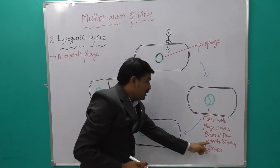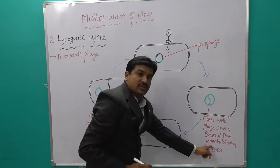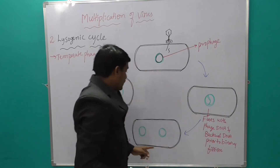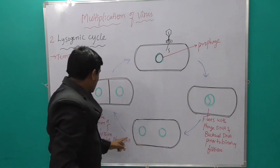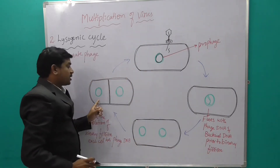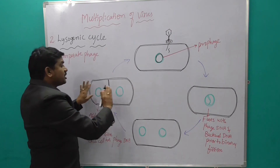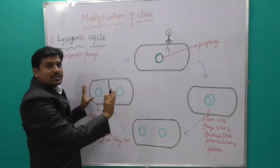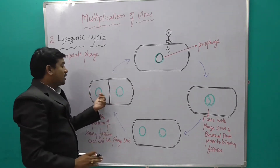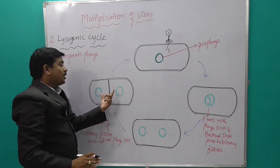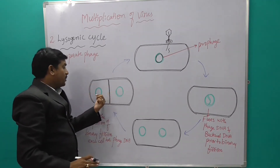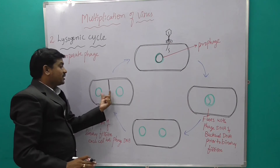Both the bacterial DNA and phage DNA are fused prior to binary fission. After the completion of binary fission, the cell divides into two parts, and both daughter cells contain the prophage.